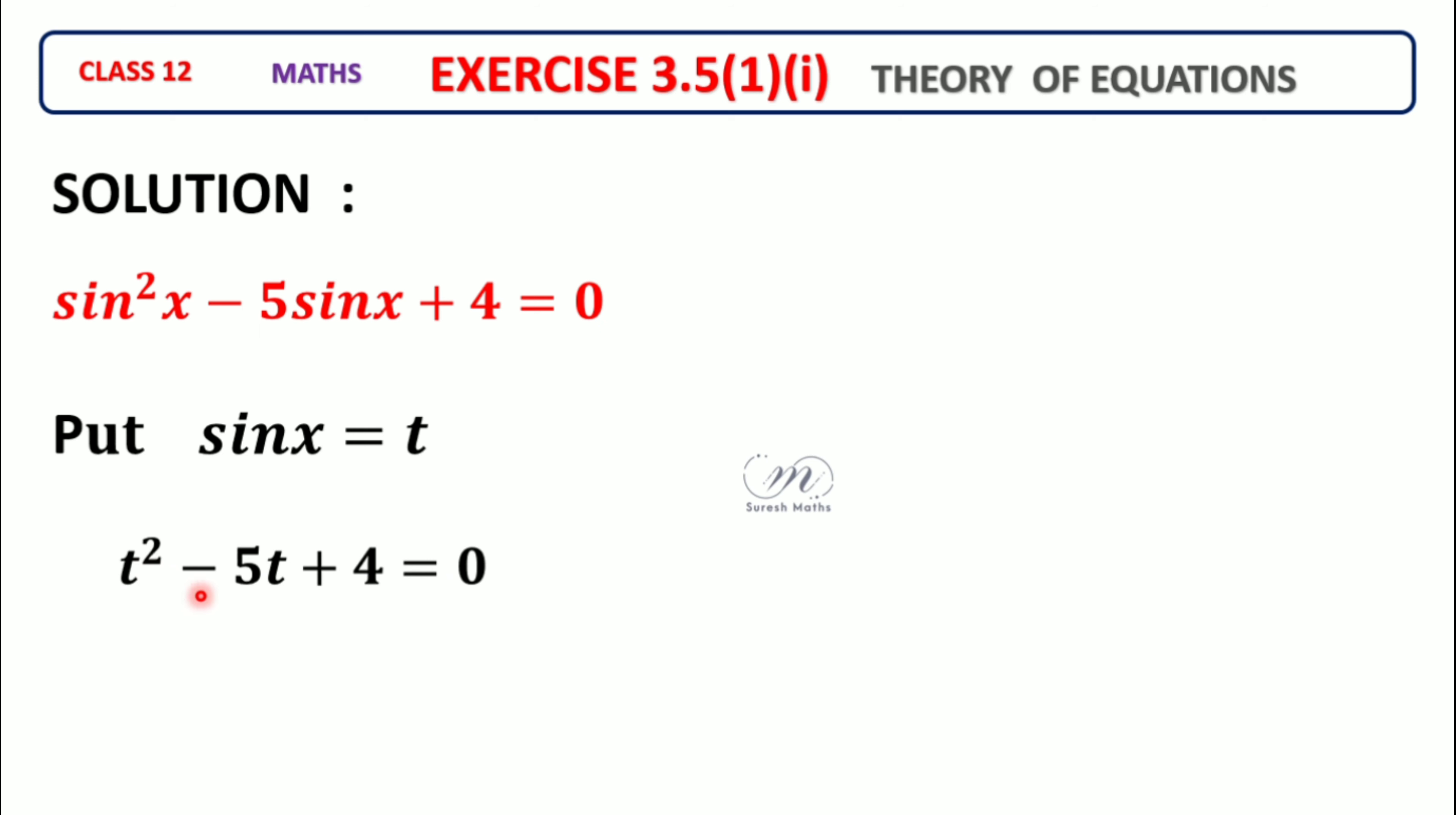This quadratic equation has two factors. The product is 4 and sum is -5, so the factors are (t-1)(t-4) = 0. This means t = 1 or t = 4.